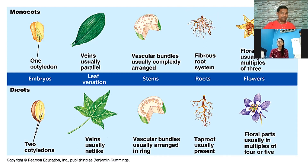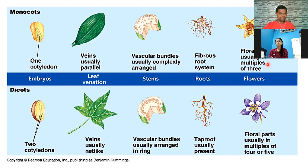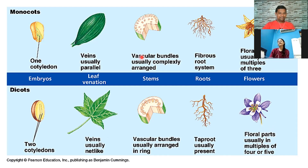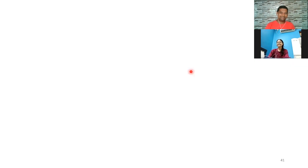Regarding flower parts: in monocots, if you count petals, sepals, and stamens, there will be three or multiples of three. In dicots it will be four or five. For example, the mustard plant has four petals — so it's a dicot. Experience always helps in identifying these features.